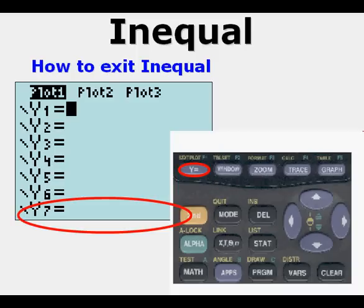We hit this screen, and we go back to Y equals, and we can see that our row of signs, five signs at the bottom, is no longer there. We're out of it.